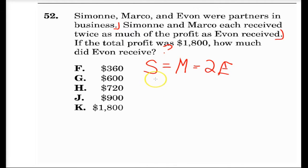So how does this help us? Well, to solve any algebraic question, you're going to want to get everything in terms of one variable. So we can skip over the whole Simone and Marco relationship and just go to Simone and Evan. And then you can say that Simone equals two times Evan.